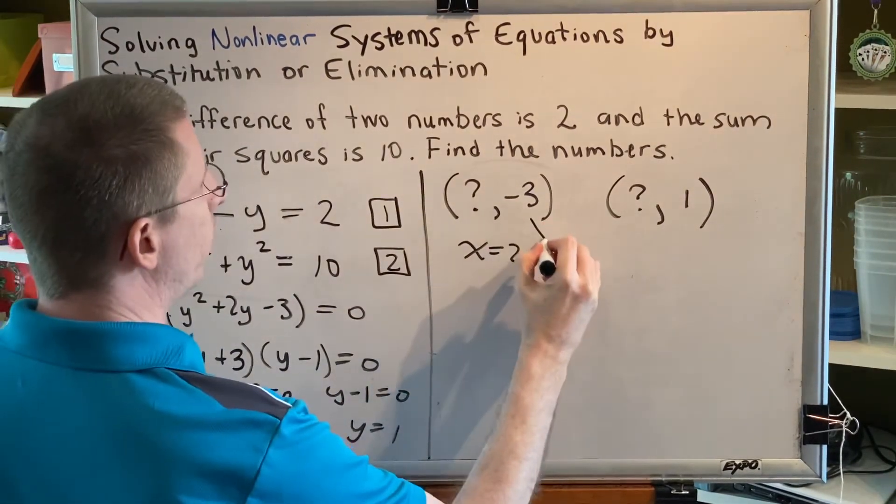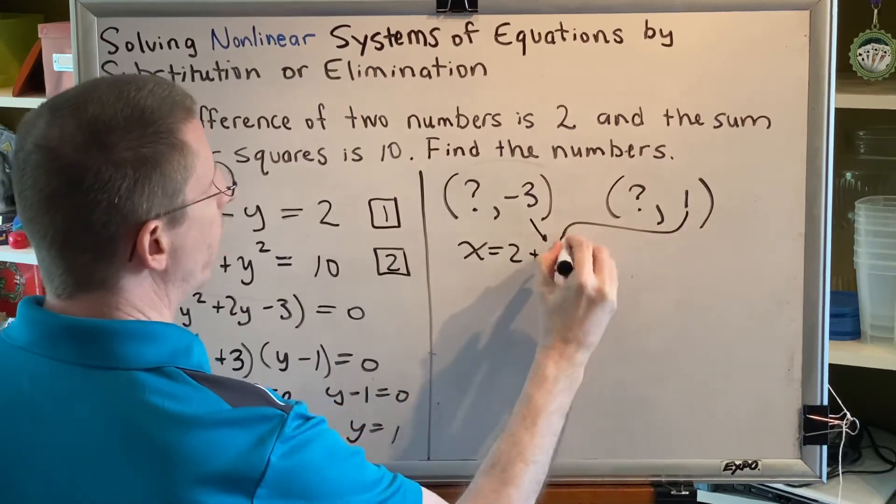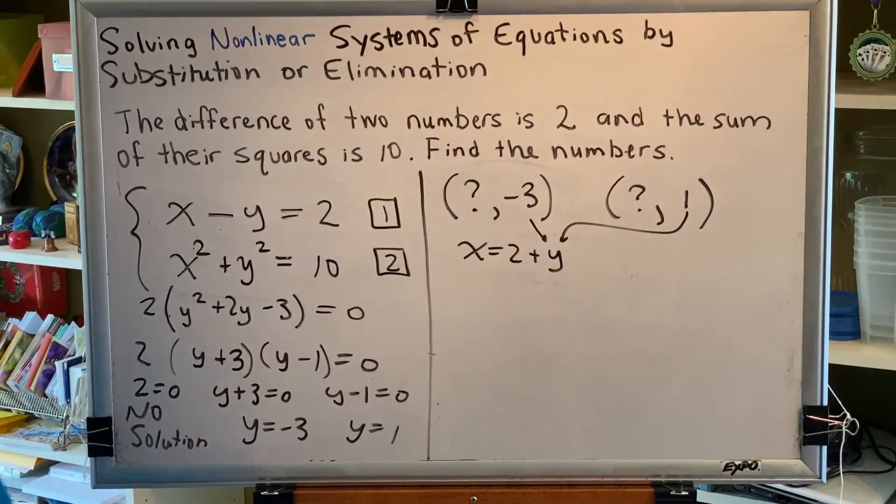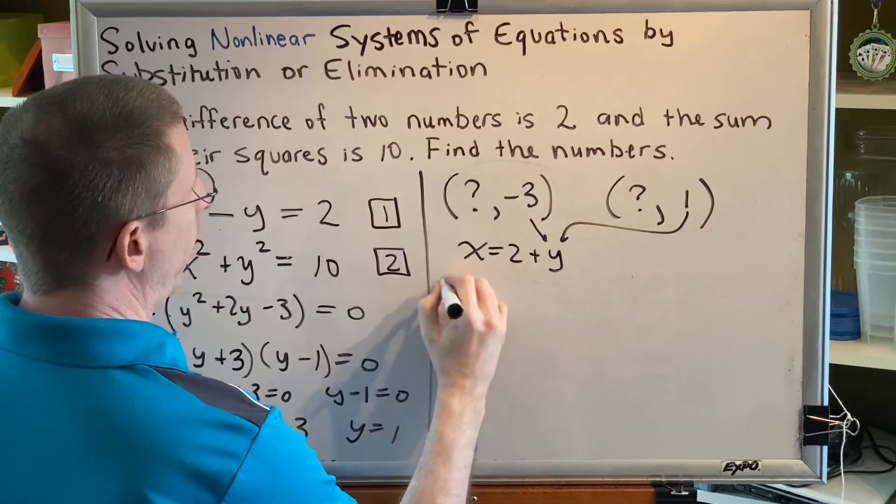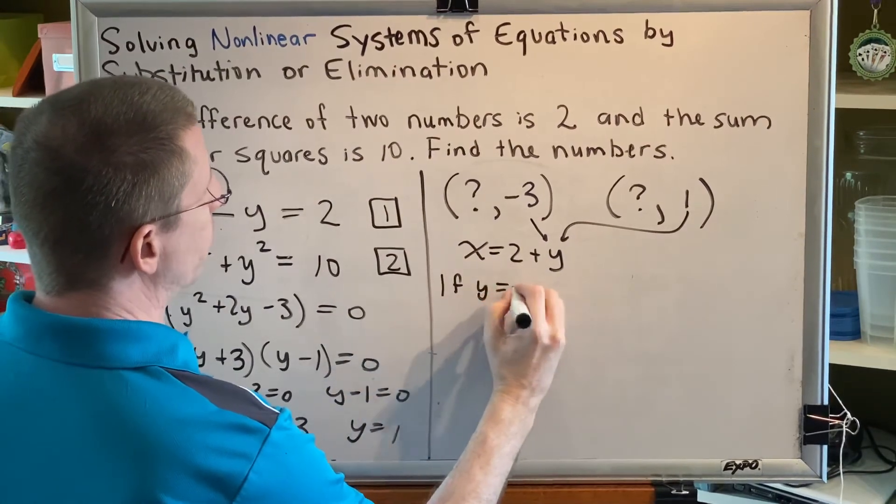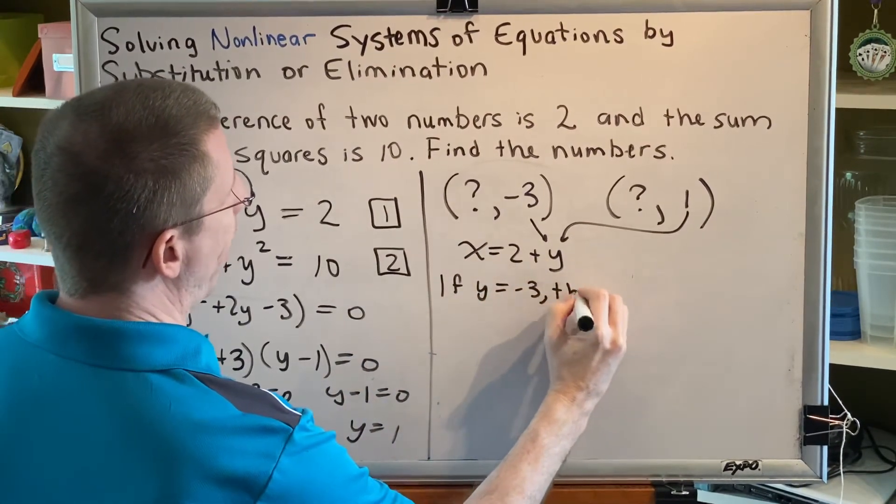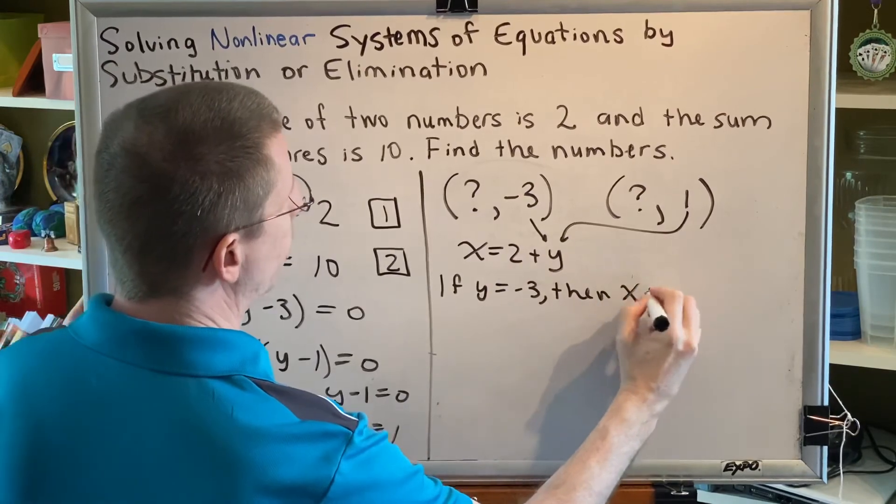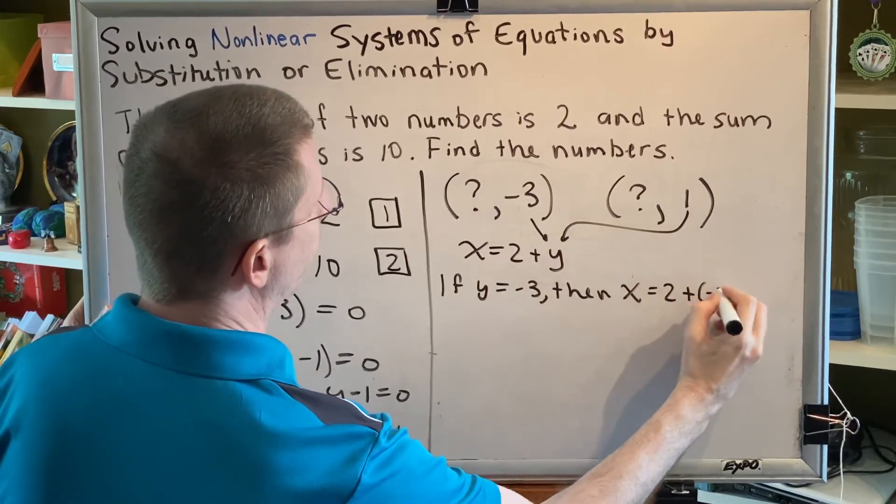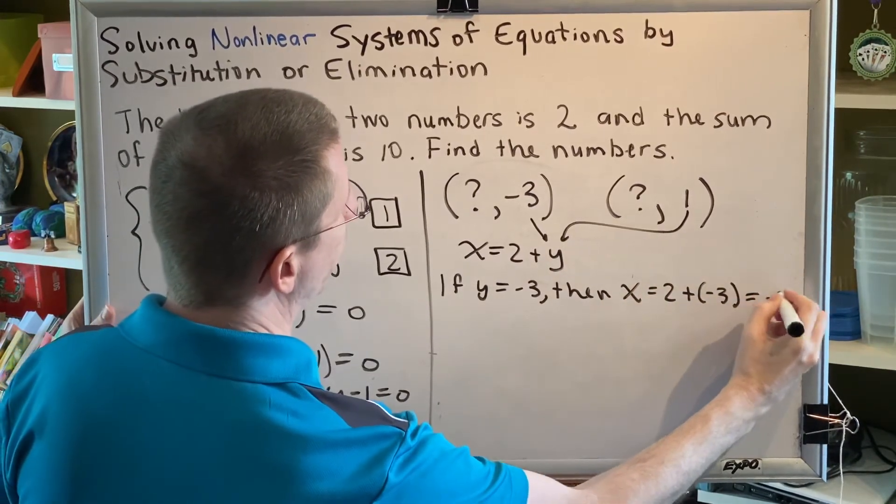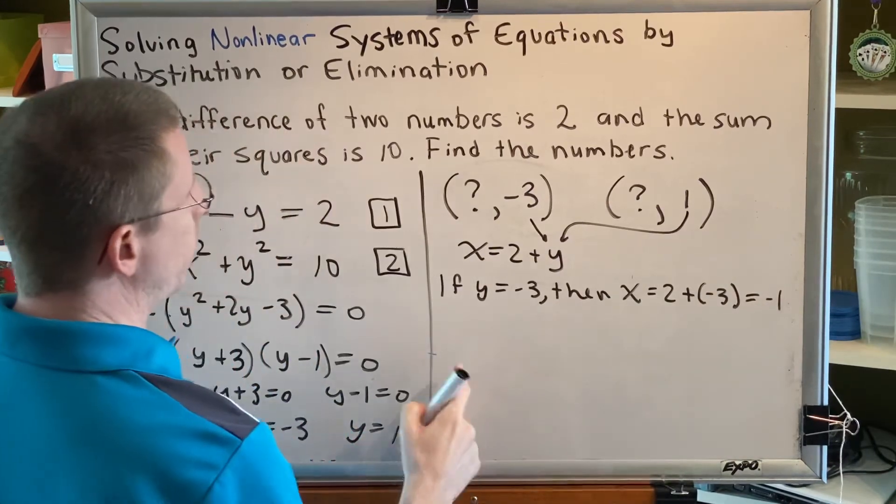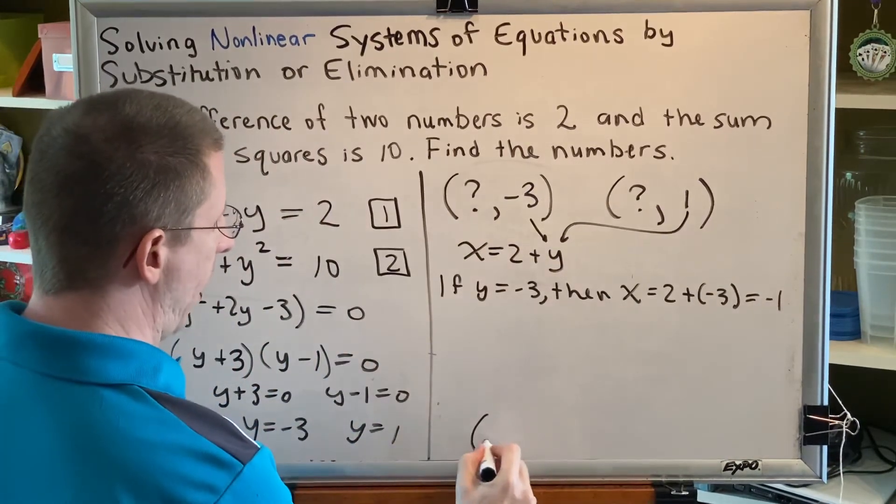Let's plug in each one of these values of y one at a time to find the x that goes with it. So let's start with the negative 3. If y equals negative 3, then x equals 2 plus negative 3, which equals negative 1. So that tells me that this question mark has to be a negative 1.